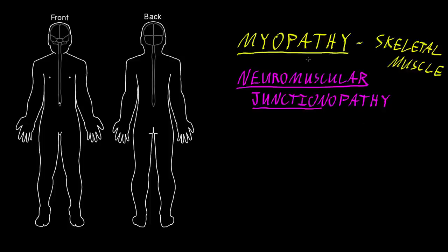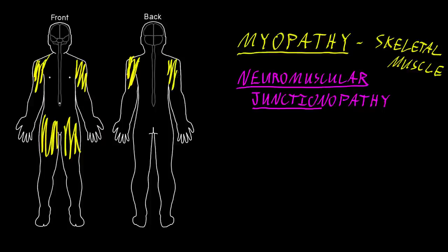If we start with myopathy, there are many different patterns of abnormalities we can see. But the most common myopathy syndrome starts with weakness of the bilateral proximal limb muscles — the big muscles around the shoulders and the hips on both sides. As myopathy progresses, we may see weakness in the distal limbs toward the hands and feet, the torso, the neck, and the muscles of the head as well.